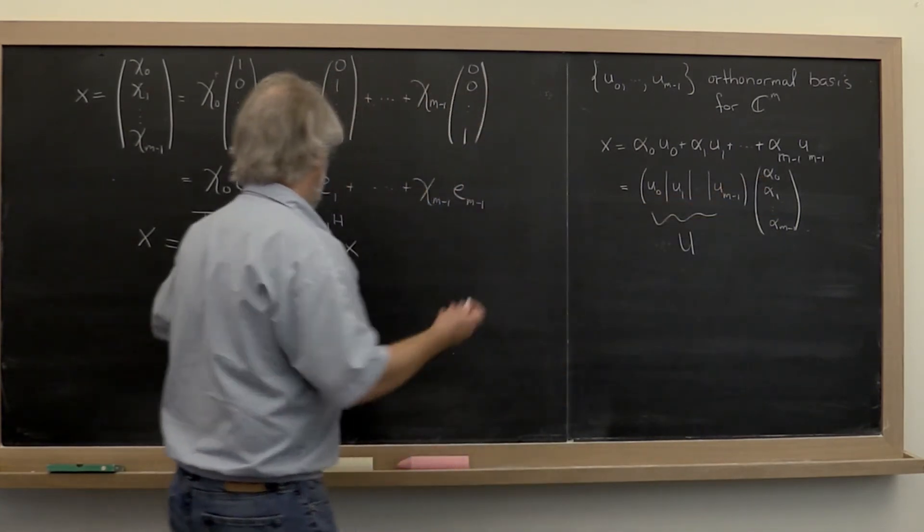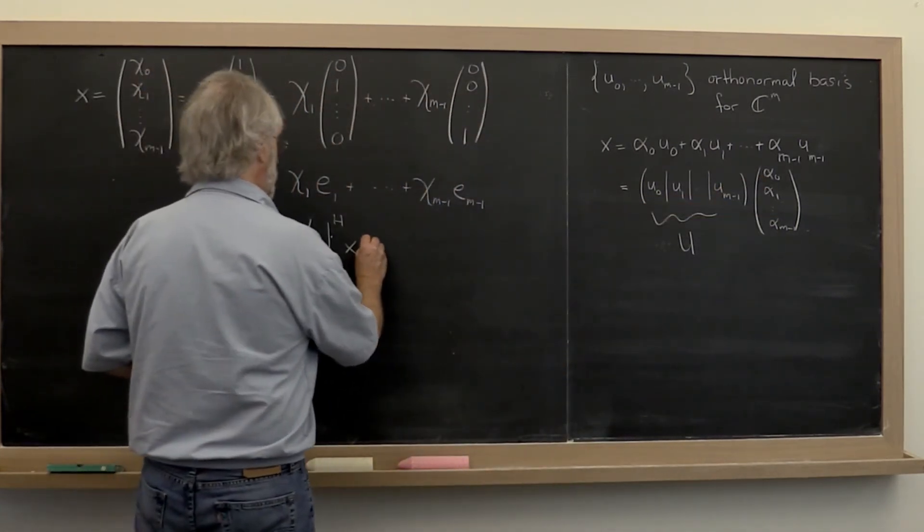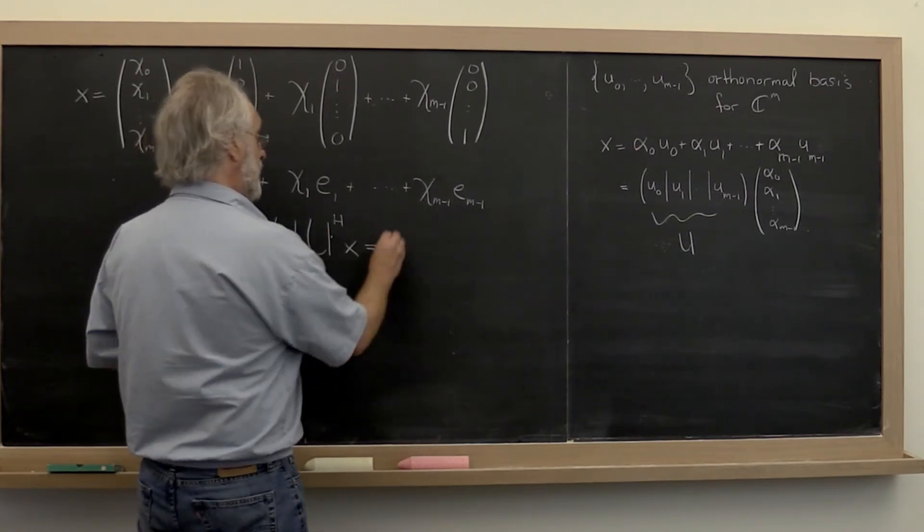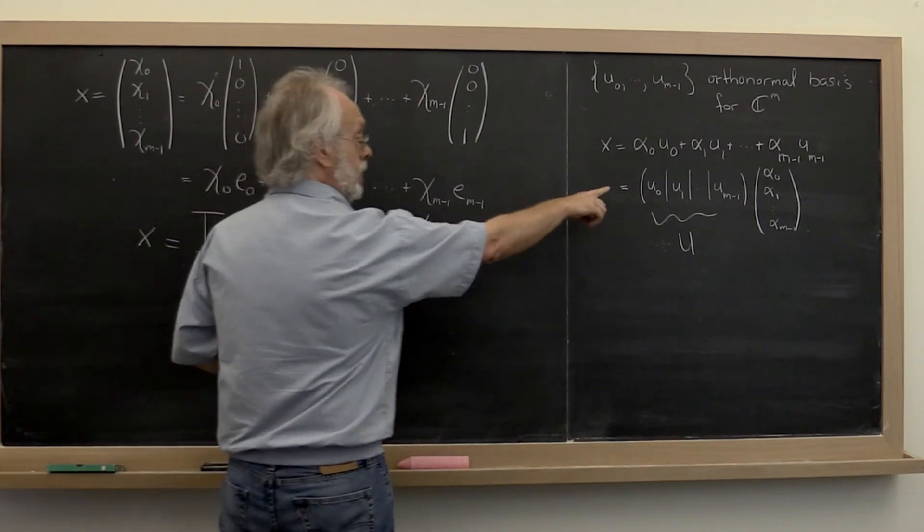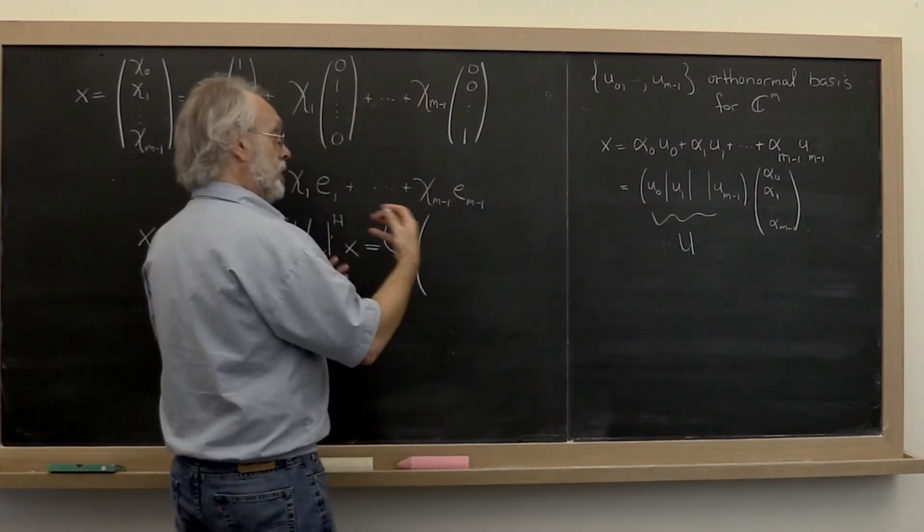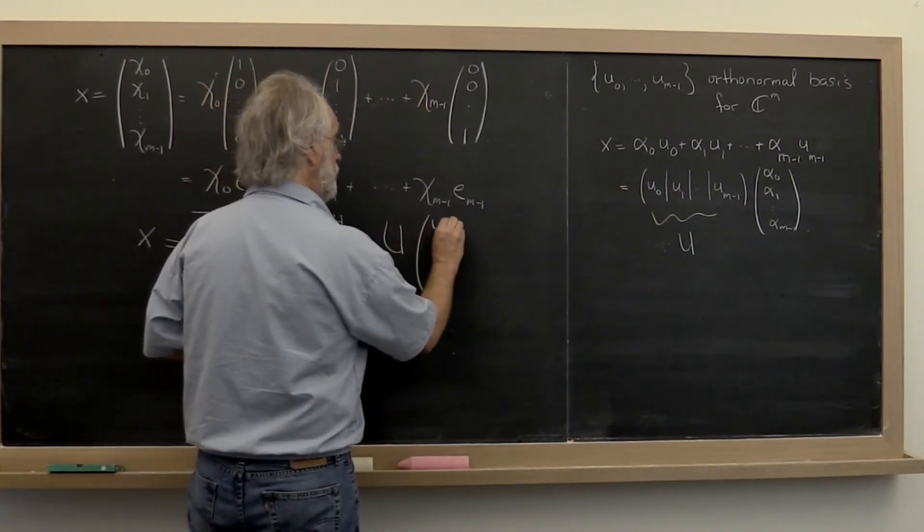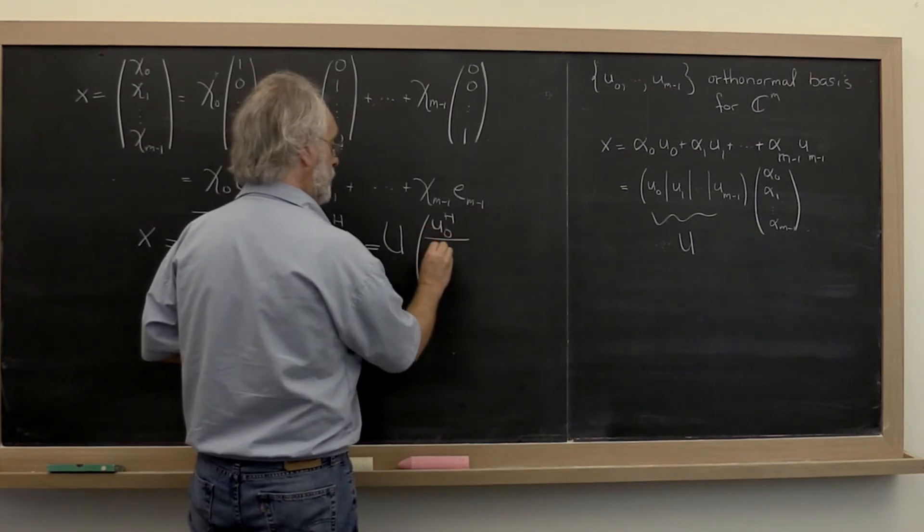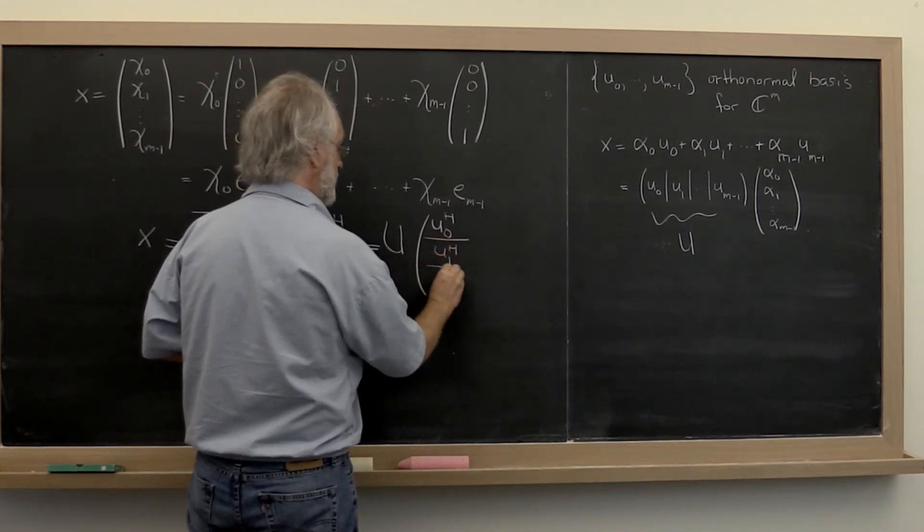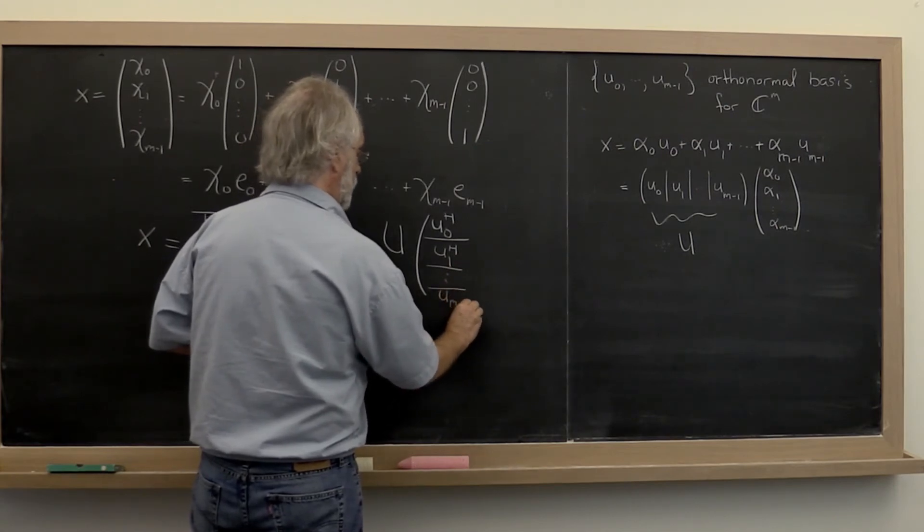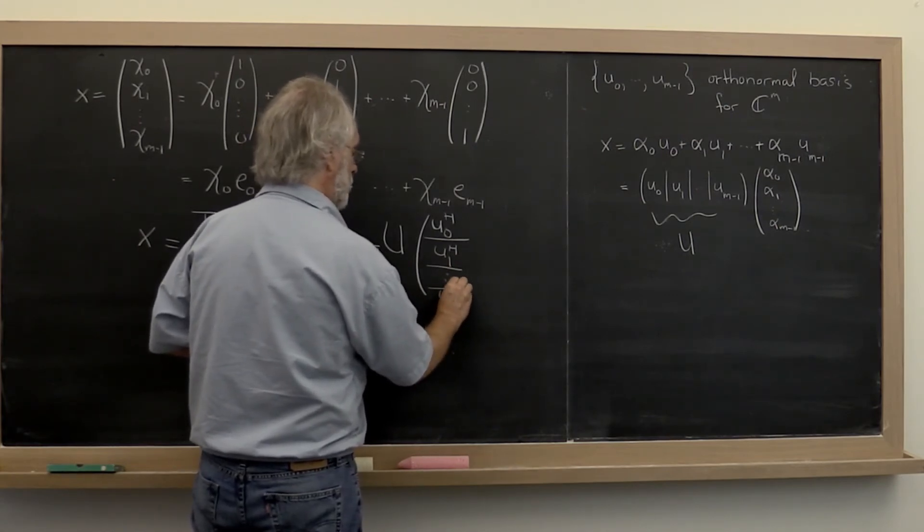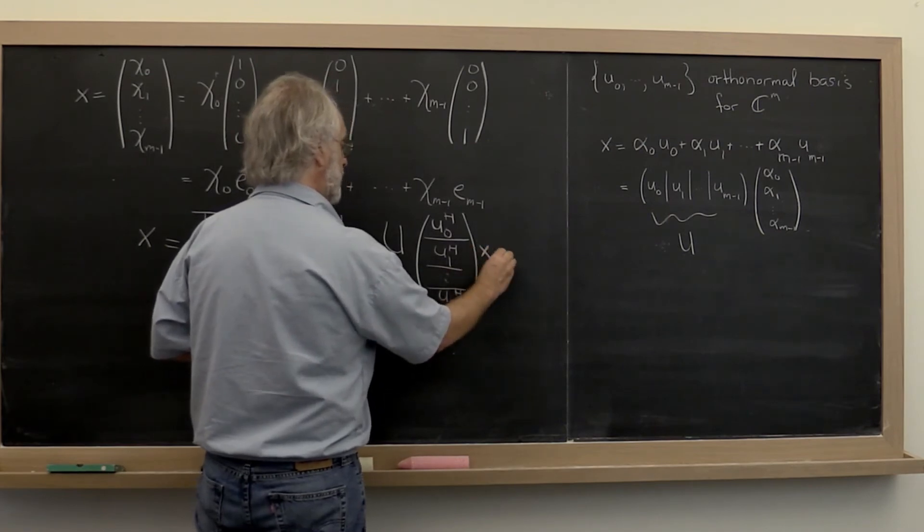And now we can go into a little bit more detail and say that's just equal to U times the matrix U written as its columns but transposed. So that gives us u0 Hermitian transpose as the first row, u1 Hermitian transpose as the second row, and so forth, u m minus 1 Hermitian transpose times the vector x.